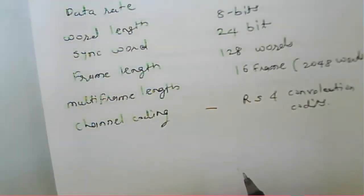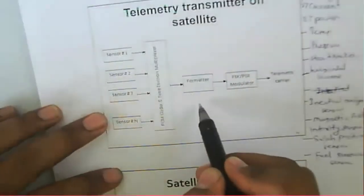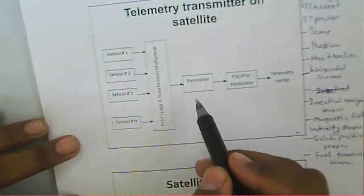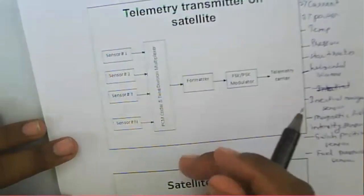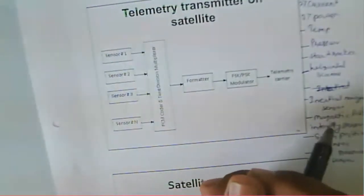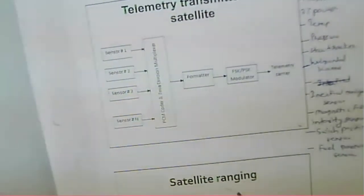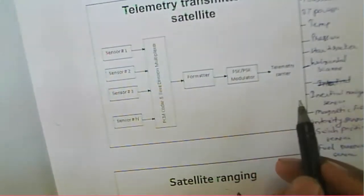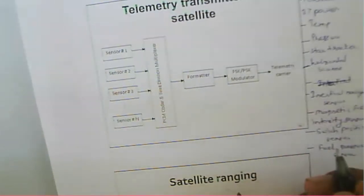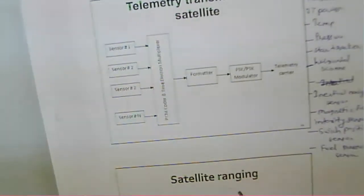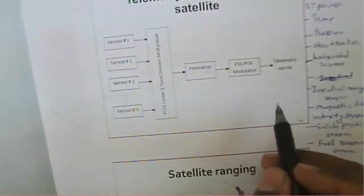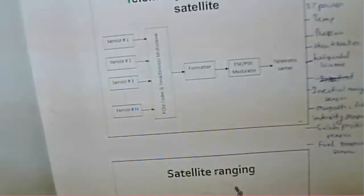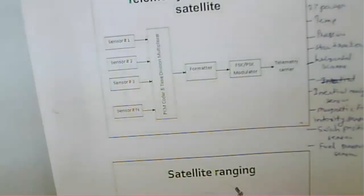The formatted data is modulated using an FSK or PSK modulator on a carrier and sent to the transmitting antenna, which provides an omnidirectional radiation pattern. During transfer orbit or from launch, the omnidirectional antenna is used to send telemetry data. Once the satellite is in its final orbit, the transponders are switched on and the main antenna is pointed toward the Earth.